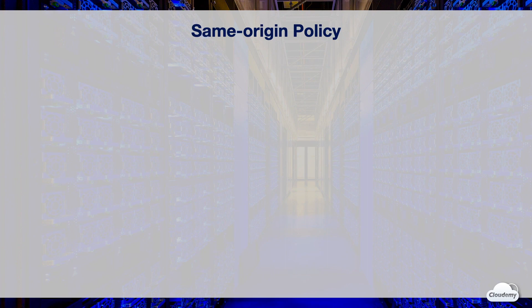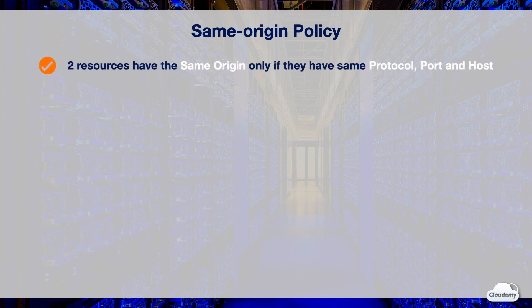Here's how browsers determine whether two web resources have the same origin. For two resources to have the same origin, they must have the same protocol, port, and host.